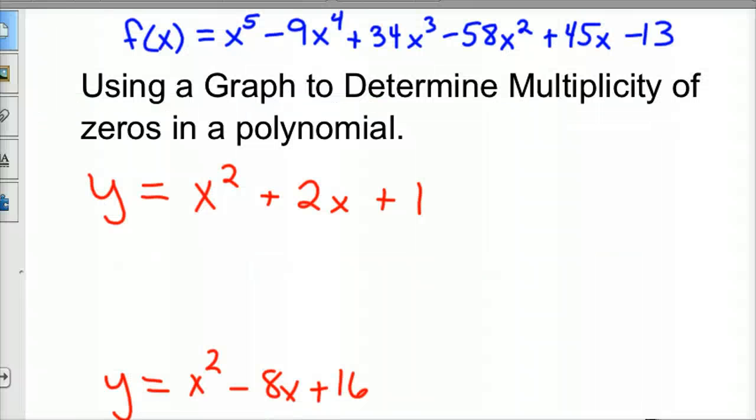At the top I have that function f(x) equals x to the fifth minus 9x to the fourth. We want to find the roots of that, and that's a tough one because we have to determine the multiplicity of some of the roots. You can do that graphically, and I'm going to use Google to do that. Let's take a look at the graph first so we kind of know what we're doing.